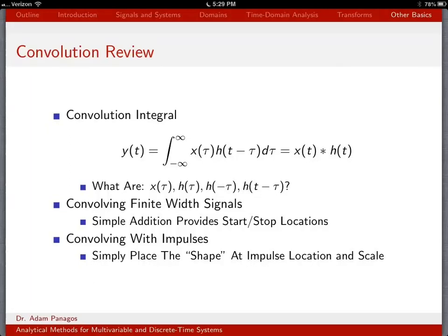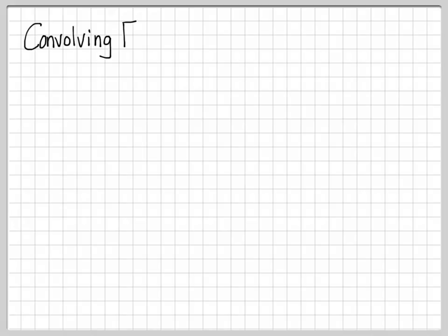Let's now talk about what happens in general when we convolve finite width signals. It turns out that there's a very simple rule to figure out the kind of starting and stopping locations of the resulting convolution, and that can be helpful when you're trying to evaluate the convolution integral.